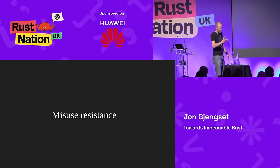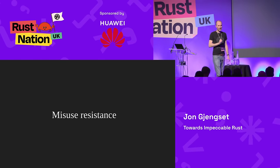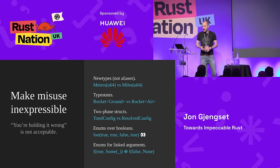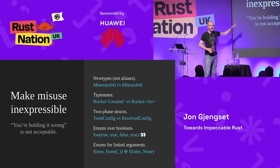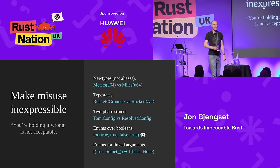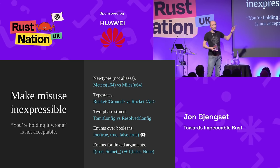The next bit is misuse resistance. You want to write your software in a way where it's very hard to use incorrectly, or at least hard to use dangerously. Misuse at best means lost time for debugging or lower performance, but at worst it means critical failures. "You're holding it wrong" is not acceptable in these settings — when the outcome of misuse is a plane crash or a nuclear reactor blowing up, that's just not okay. You really want to make misuse inexpressible.